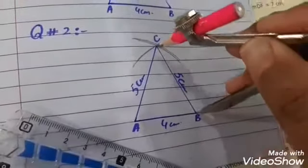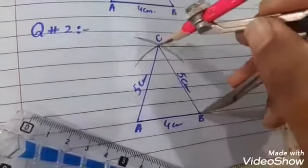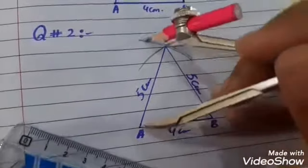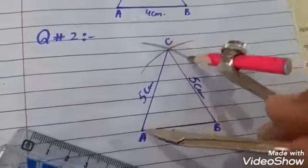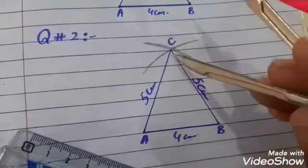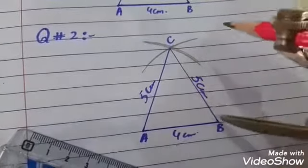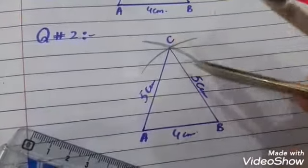From point B, draw another arc with the same 5 cm measurement. The two arcs intersect at point C, so AC and BC both equal 5 cm.